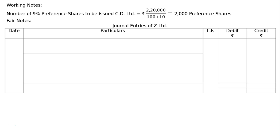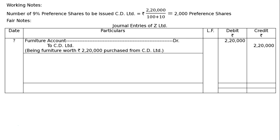In the journal entries of Z Limited, the first entry will be: Furniture account debited to CD Limited, being furniture worth Rs.2,20,000 purchased from CD Limited — Rs.2,20,000 in the debit and Rs.2,20,000 in credit.